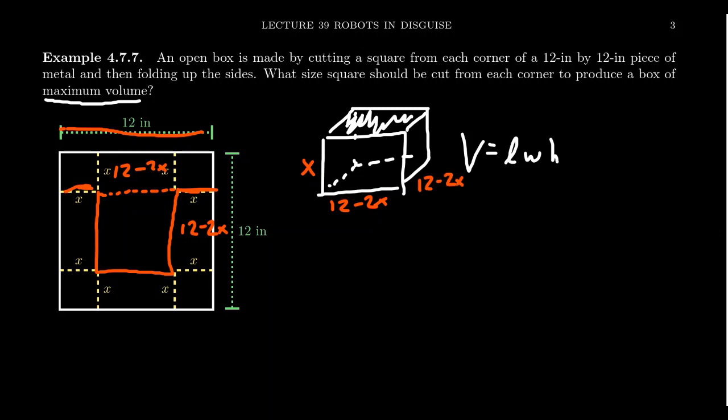And so then our volume will look like 12 minus 2x, 12 minus 2x, and x. Which 12 minus 2x does have a factor of 2 you can factor that out, so you get 4 times 6 minus x squared times x. This is our optimizing function.